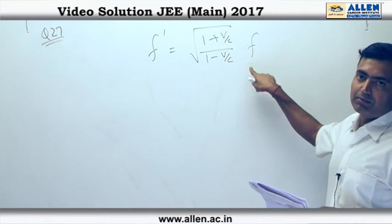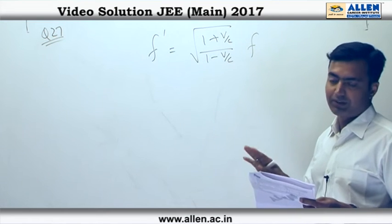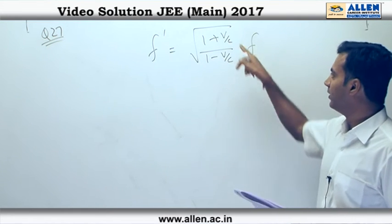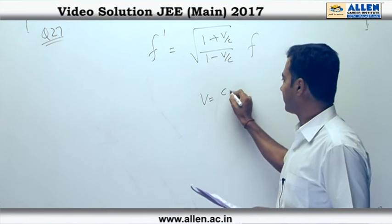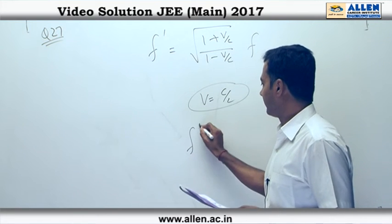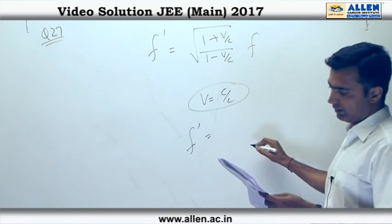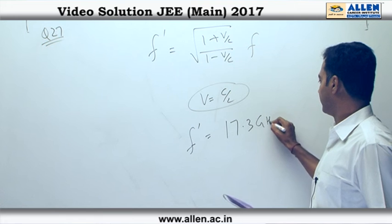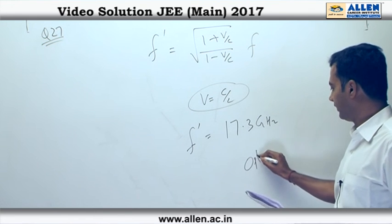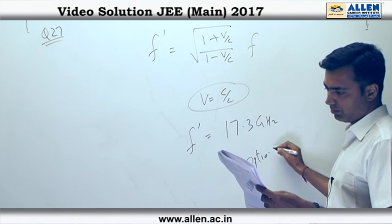Now note this is being used because the observer's velocity is pretty high which is c by 2, feeding in the values like v equals to c by 2, f dash comes out to be around 17.3 gigahertz, now this is option 1